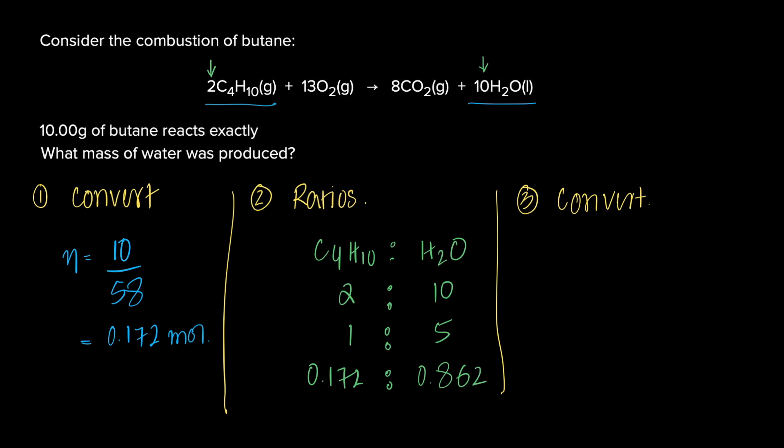Those are the moles of water produced. So we can figure out the mass of the water produced, which is rearranging the equation, moles times the MR. The moles are 0.862 times the MR, which is 18. That brings our answer to 15.52 grams. Easy.